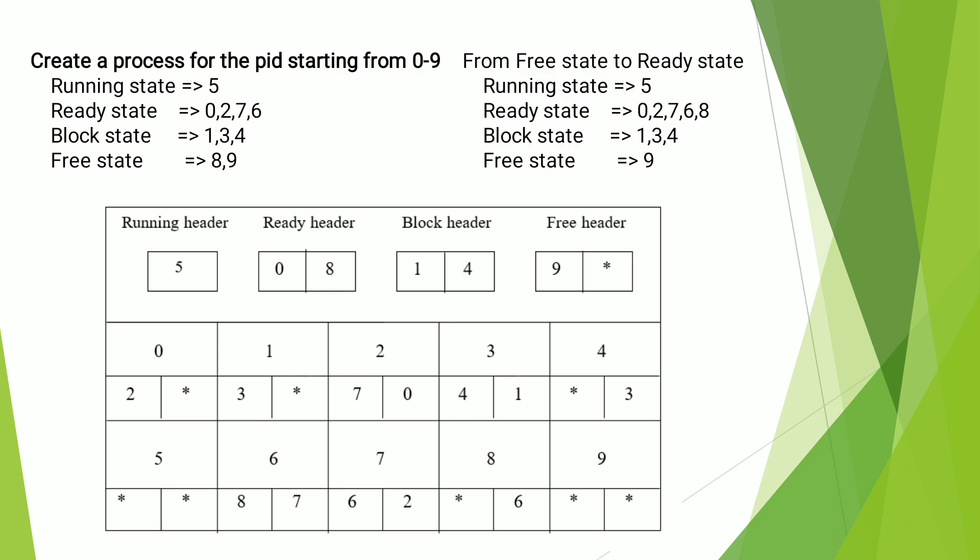Here consider the running state: the process which is in the running state is five. The ready state has process IDs starting at zero and ending at eight. The blocked state contains one, two, four, and the free state has process ID nine. For process five in the running state, there should be no previous process or next process, so it is assigned as asterisk.